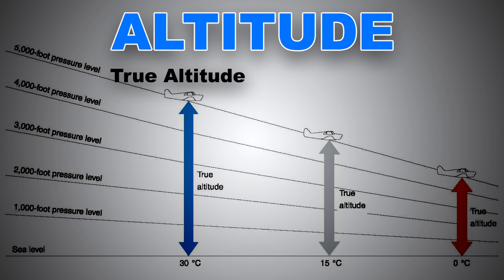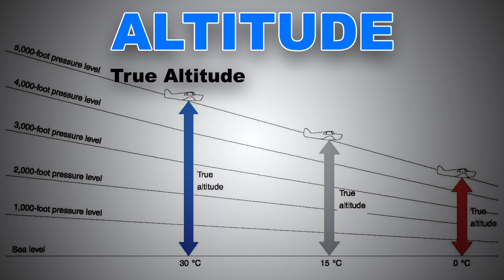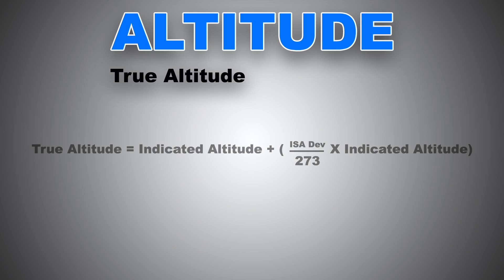Have you ever heard of 'from high to low, look out below'? It means if you are flying from an area of high temperature into an area of lower temperature, your altimeter will overread, making you believe that you are higher than you actually really are. As you can see in this diagram, even if the airplane is maintaining 5,000 feet indicated — that is what is displayed on the altimeter — the actual altitude, which is the true altitude, is actually lower. For ground school exams and specifically for GNAV and meteorology, here is the mathematical formula to calculate your true altitude.